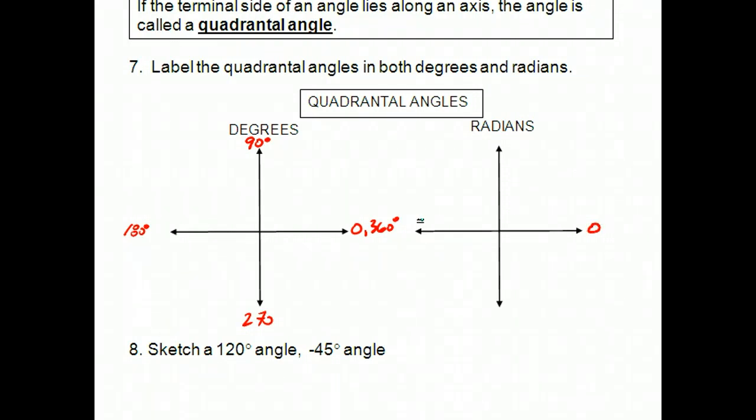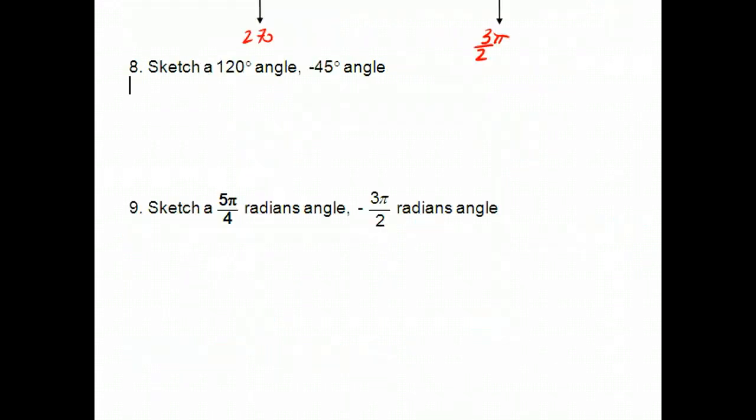We know that this one over here is π radians. So halfway in between has got to be π over 2. And this one down here, if this is π, and we know that this one all the way around is 2π, then this one here must be 3π over 2.